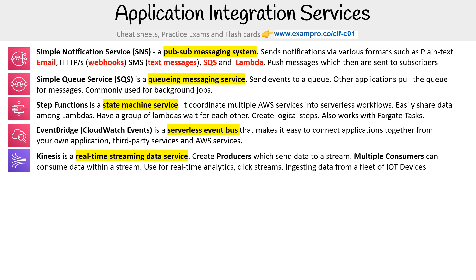Then there's Kinesis — a real-time streaming data service. It creates producers which send data to a stream, and multiple consumers can consume data within a stream. It is used for real-time analytics, click streams, and ingesting data from a fleet of IoT devices.